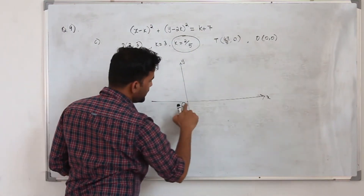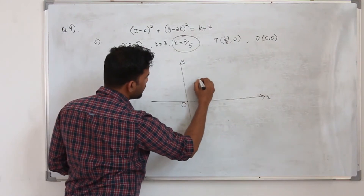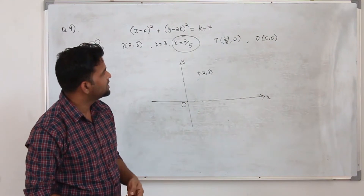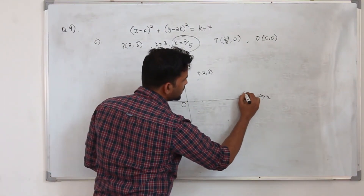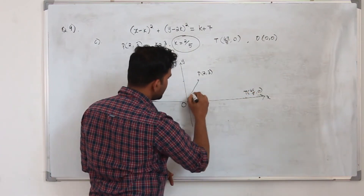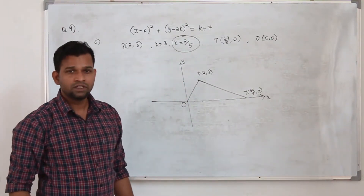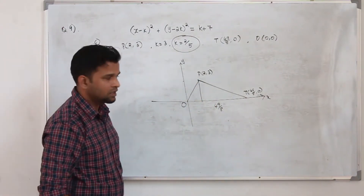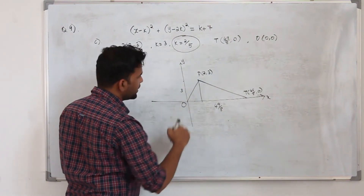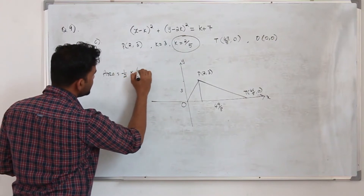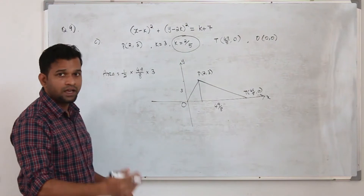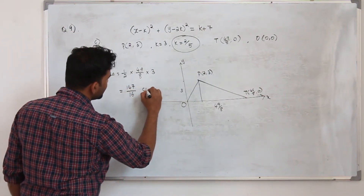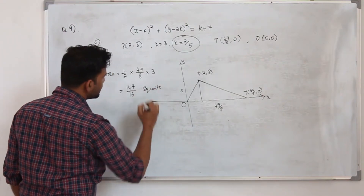We now draw a rough diagram to construct triangle OPT. Origin O is at 0 comma 0, point P is at 2 comma 3, and T is at 49 upon 8 comma 0. The base of the triangle along the x-axis is 49 upon 8, and the perpendicular height from P is its y-coordinate, which is 3. The area is half times base times height: half times 49 upon 8 times 3 equals 147 upon 16 square units.